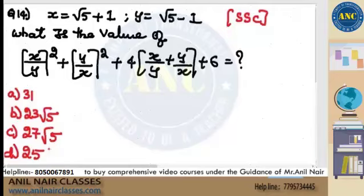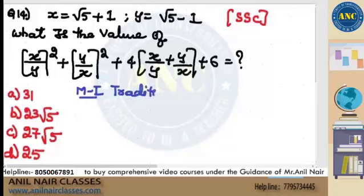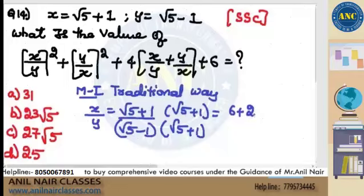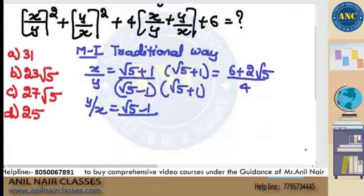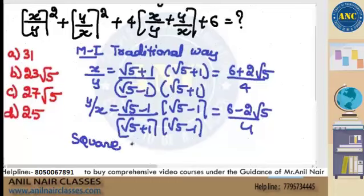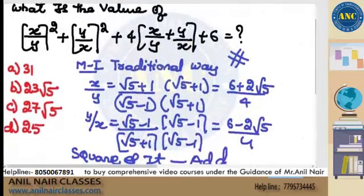Now, how will students traditionally solve this? They'll compute x/y = (√5+1)/(√5−1), rationalize by multiplying (√5+1)/(√5+1), getting (6 + 2√5)/4. Similarly y/x = (6 − 2√5)/4. Then they'll square and add. This is the traditional method — it gives the answer but takes a lot of time.